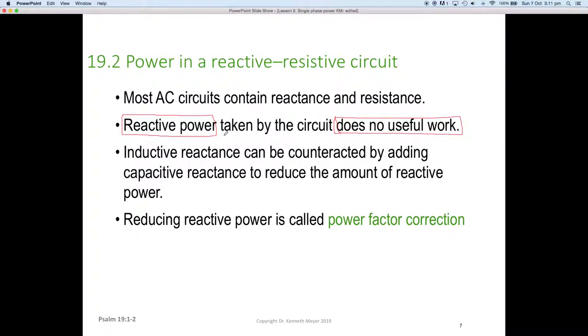Inductive reactance can be counteracted by adding capacitive reactance. Remember we said they were at 180 degrees from each other. Inductive reactance was at 90 degrees from unity and capacitive reactance was at 90 degrees the other way. By reducing the amount of reactive power, we just add some capacitive reactance and it counteracts the inductive reactance. If we manage to do that by reducing the reactive power, it's called power factor correction.